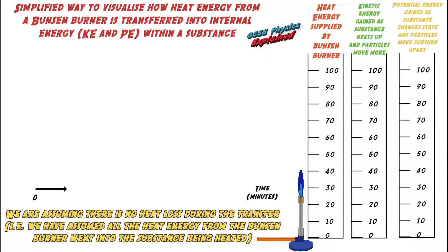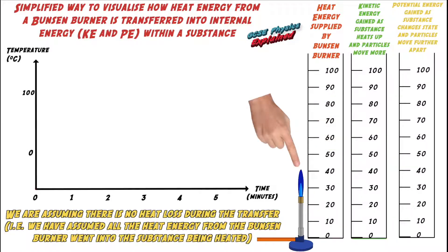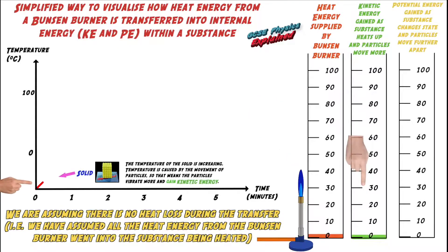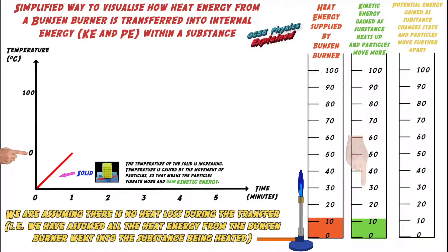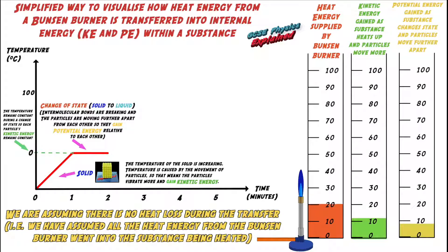It's the same temperature-time graph as before. I've assumed the heat energy from the Bunsen burner is being supplied at a steady rate — in other words, I'm not making the flame bigger or smaller. You can clearly see the kinetic energy increasing at first as the temperature increases. Then the potential energy increases as the substance changes state, but not by much because the particles don't move that much further apart when changing from a solid into a liquid.